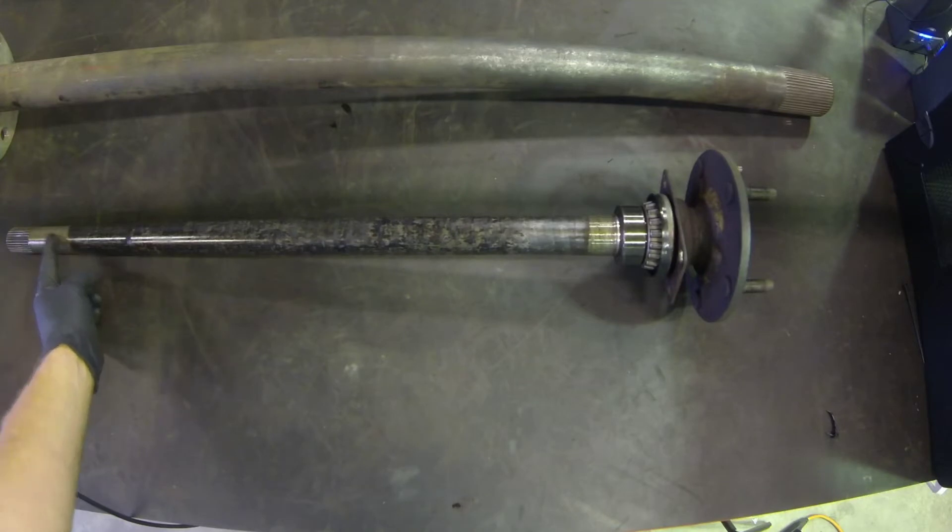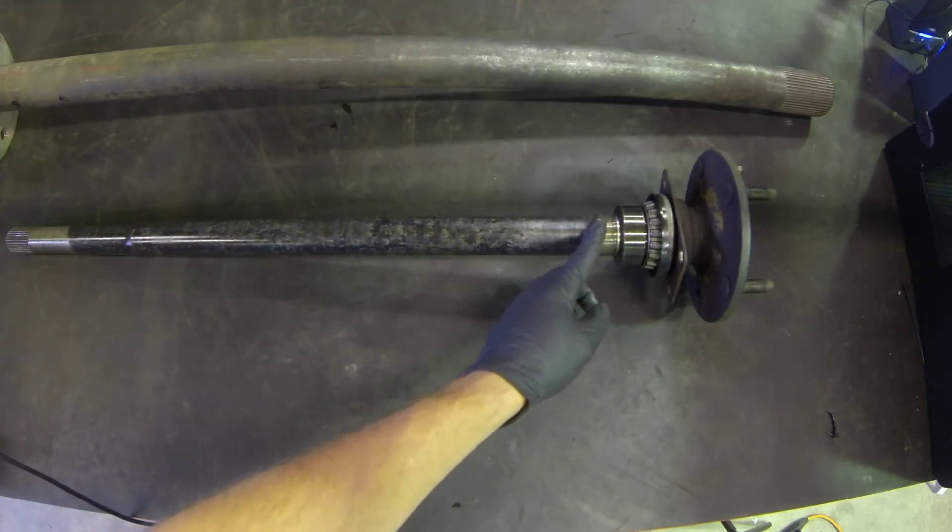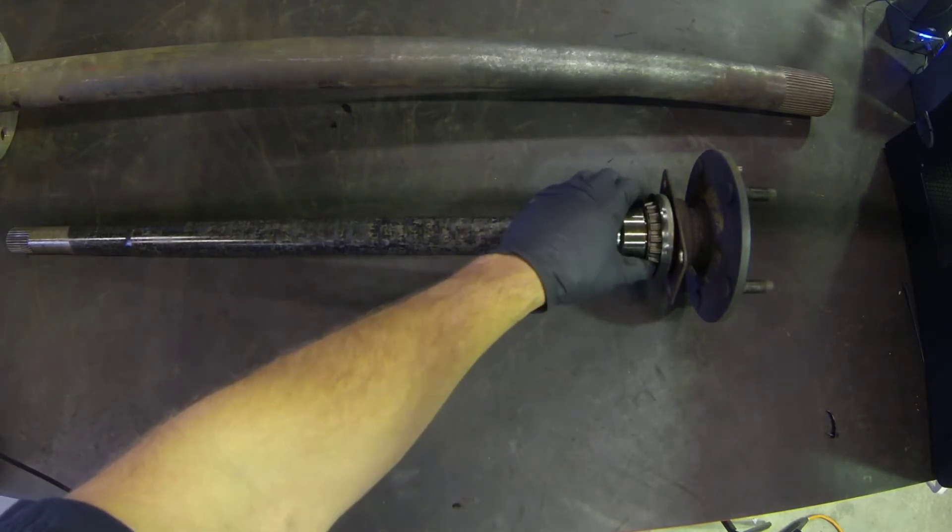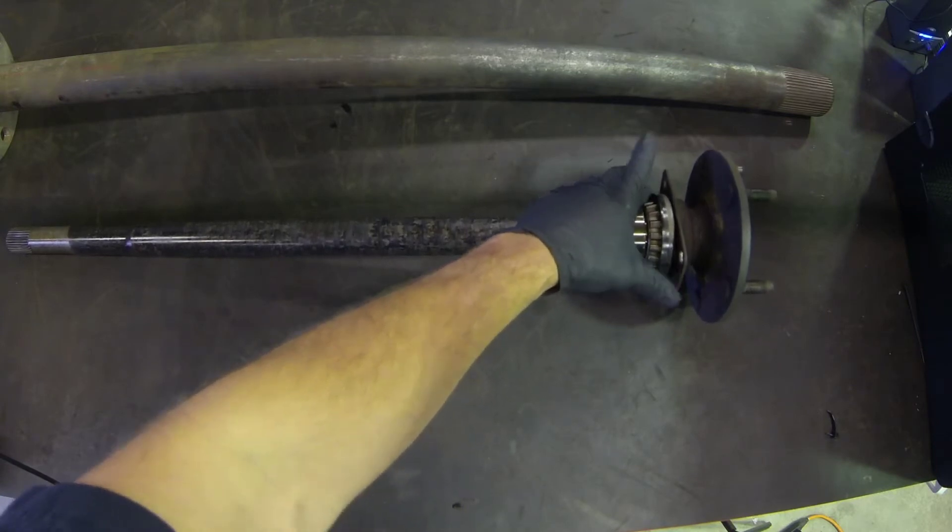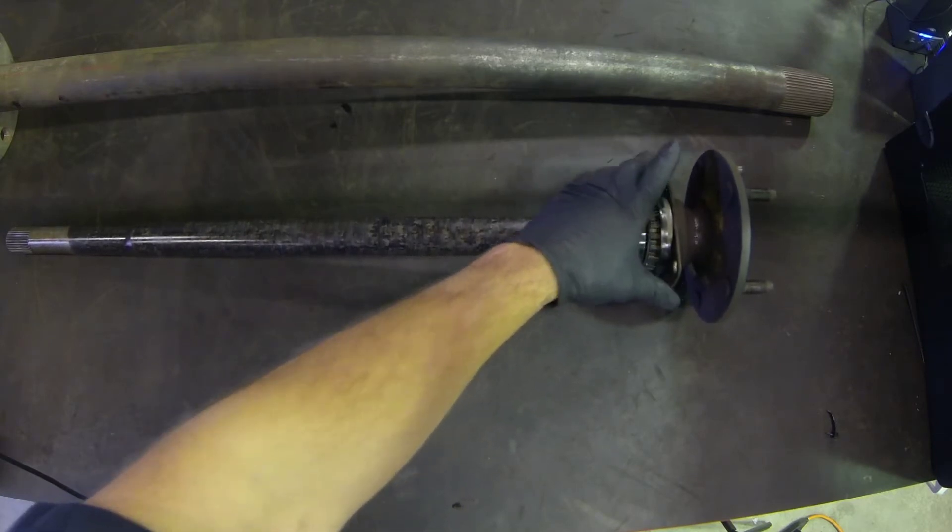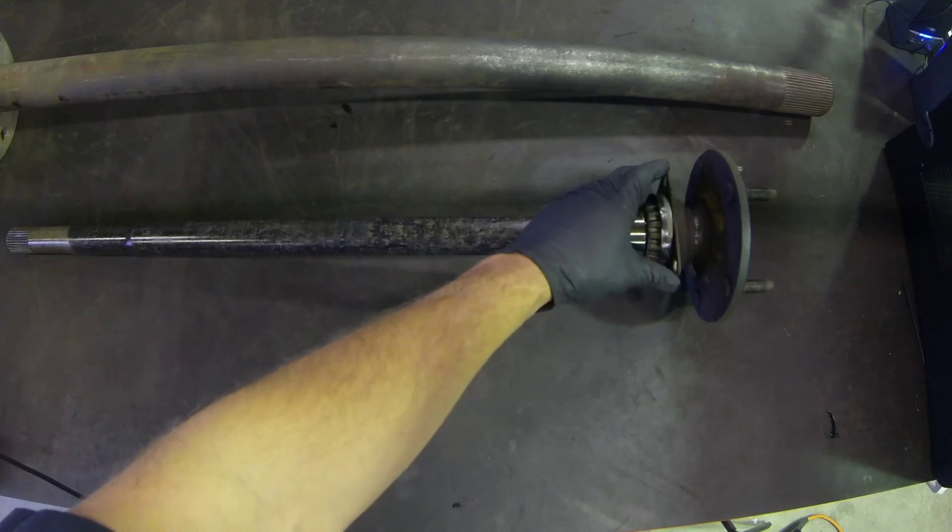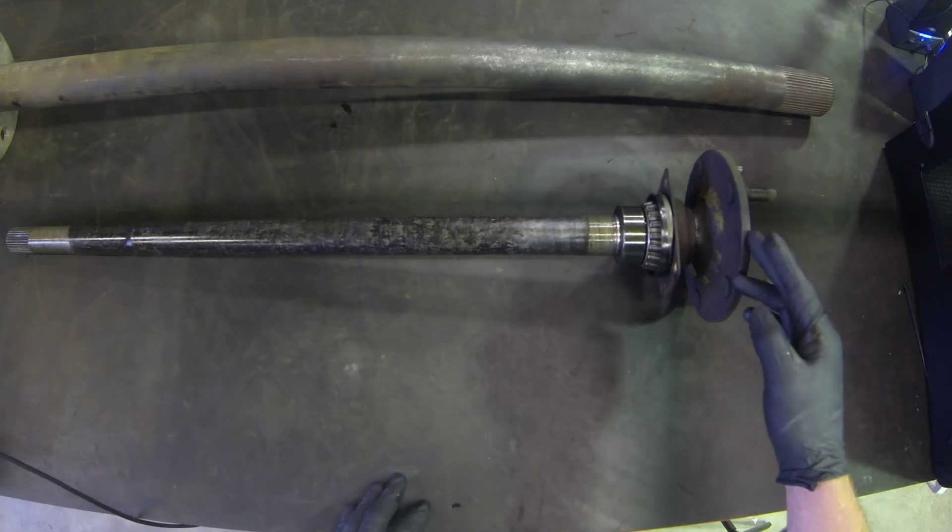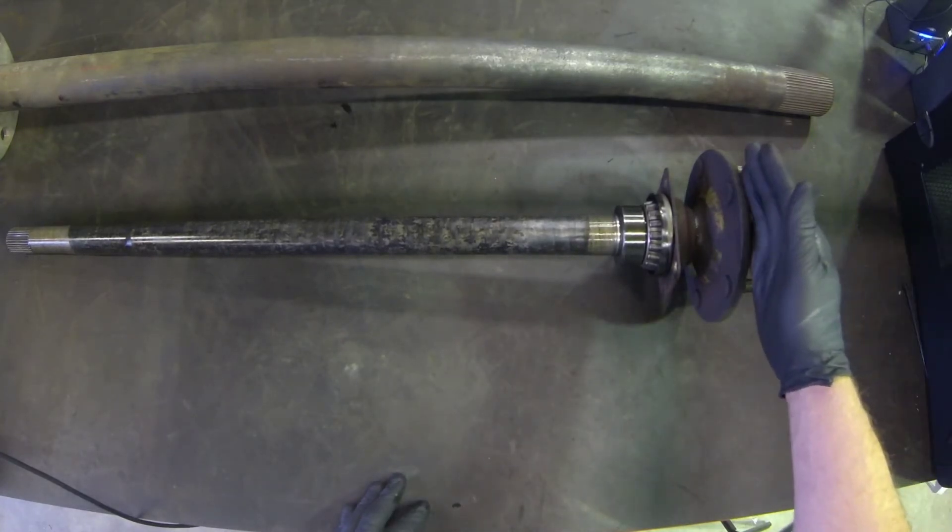And then our shaft itself would go through our axle housing, axle tube, to the outboard side where we'll see the wheel bearing cup that this cone would ride in, our outer seal, and a plate to hold all of those in place on the axle housing itself. And then outside of that we see the flange and our studs that our wheel assembly would mount onto.